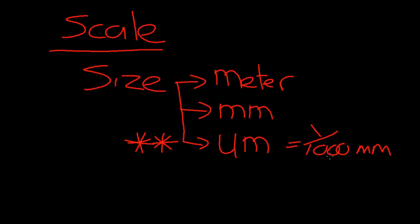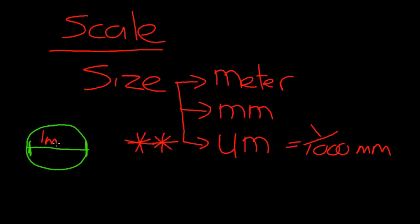When I think about thousandths of a millimetre, I always think about a pen. If you look at the sharp end of a biro, it's got that ball on the end — that ball is about one millimetre across. And if it's one millimetre across, that means it's a thousand micrometres across. So the end of a pen is a quick measure that gives me an idea of scale.